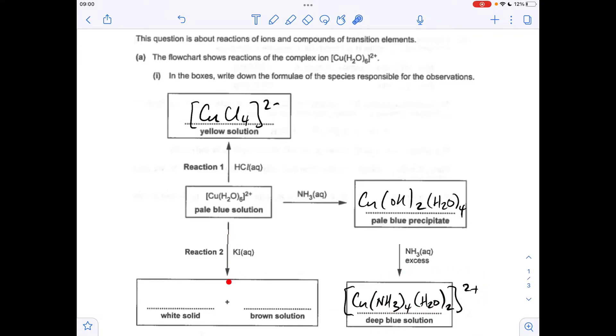Moving on to reaction two now. If you add a source of iodide ions to the pale blue solution, the white solid is copper(I) iodide and this brown solution is iodine.